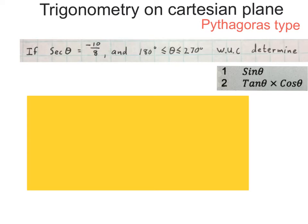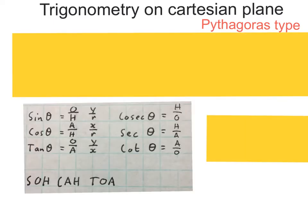Before answering this question there's quite a lot of pre-knowledge that you need to know. I'm going to run through it quickly. The most basic knowledge that you need to know is SOHCAHTOA, which means sine is O over H, cos is A over H, and tan is O over A.